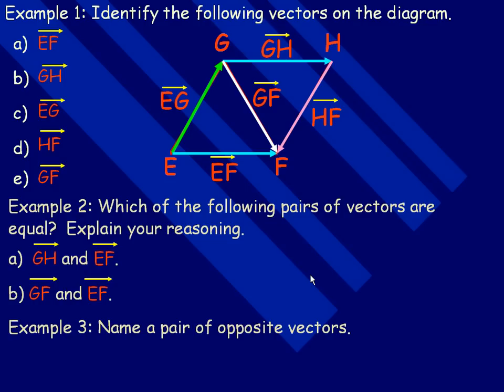In example two, we're asked which of the following pairs of vectors are equal. GH and EF. So this is GH, this is EF. Notice that they are parallel, the same length, and they're pointing in the same direction. So they would be equal because all three of those properties from the previous page hold.